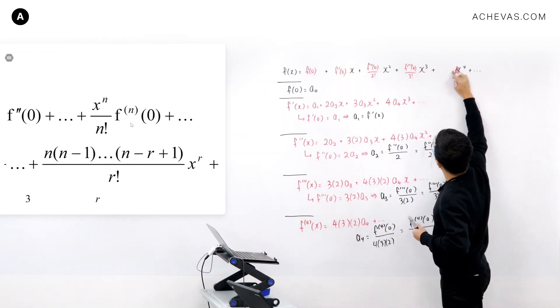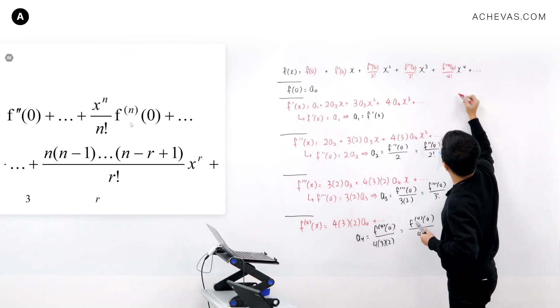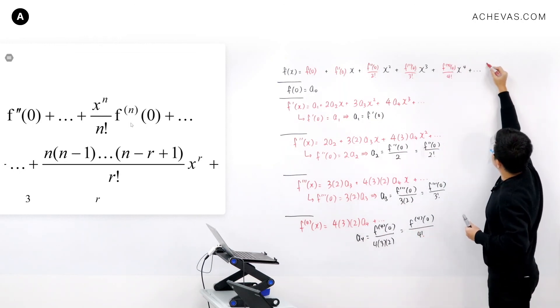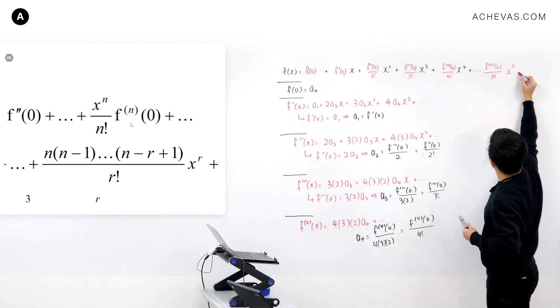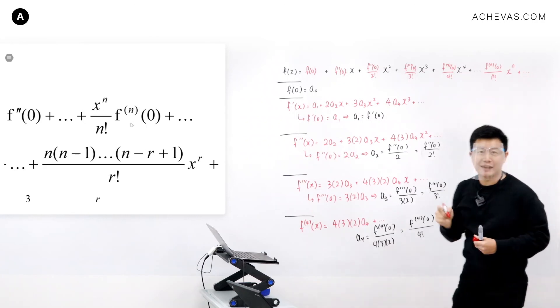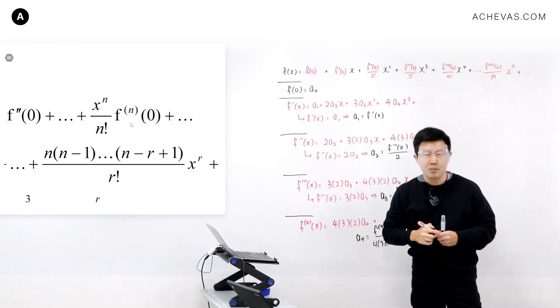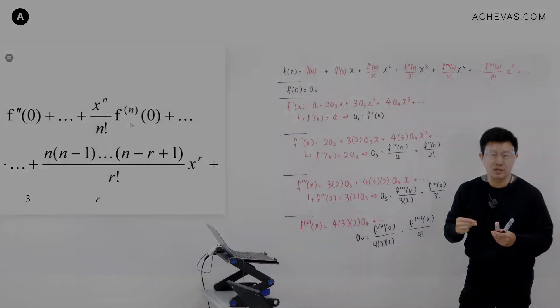This is f''''(0) divided by 4 factorial. In fact, I know what the general term is: f^(n)(0) times x to the power of n, divided by n factorial, plus dot dot dot. It is an infinite polynomial. But when it comes to the actual question...